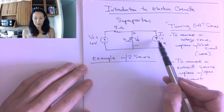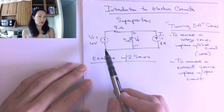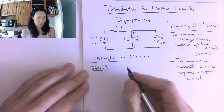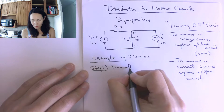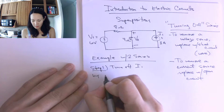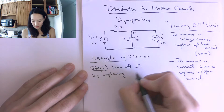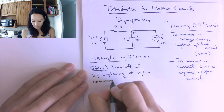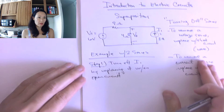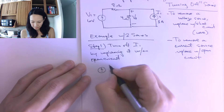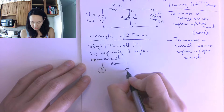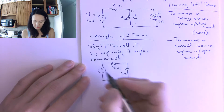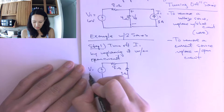The first step is we're going to turn off this current source and just look at the circuit with V1 in. Step one of solving a circuit using superposition: we're going to turn off I1 by replacing it with an open circuit. So my circuit now just has V1 in it and these two resistors in series — that's my eight ohm resistor and my four ohm resistor, and V1 is six volts.